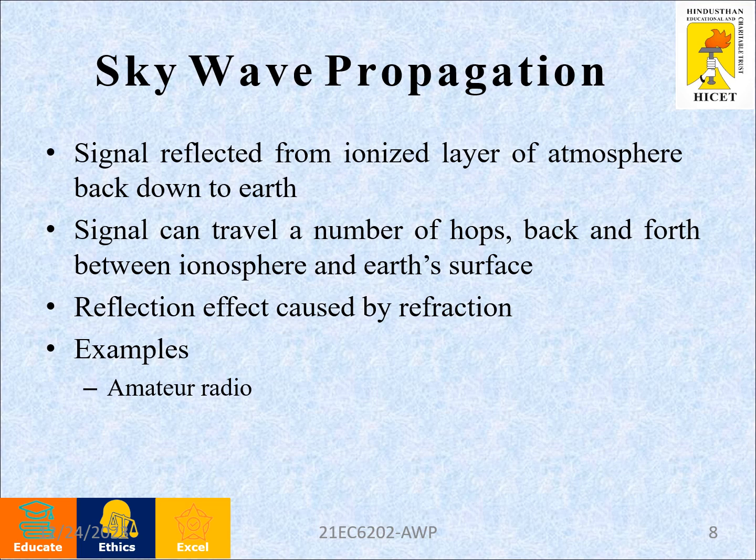The next one is sky wave propagation. Signals are reflected from the ionized layer of the atmosphere back down to earth. Signals can travel a number of hops back and forth between the ionosphere and the earth's surface. The reflection effect is caused by refraction — an example is amateur radio.